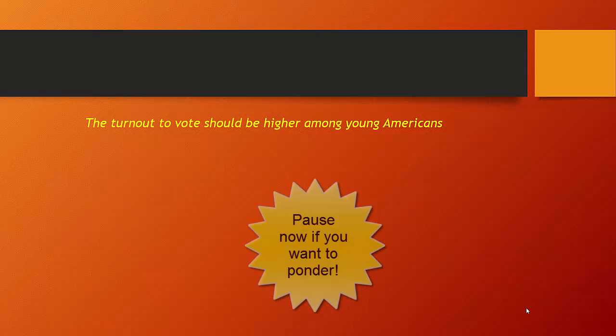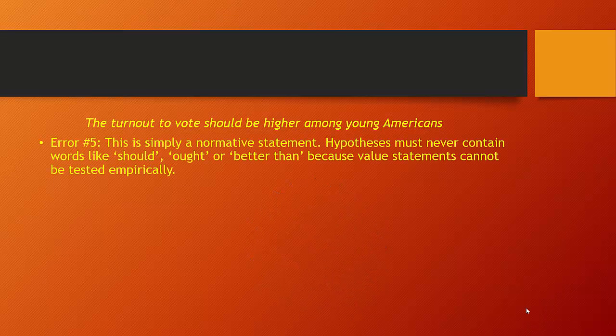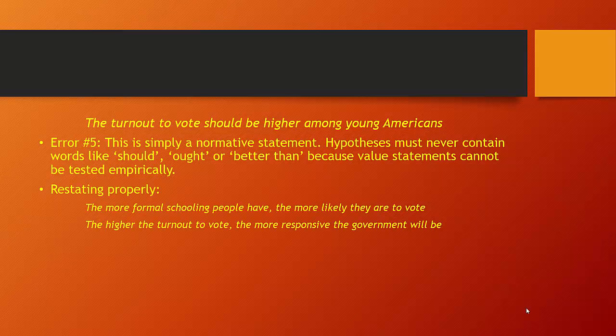Here's a new one: 'The turnout to vote should be higher among young Americans.' If you guessed that this is a normative statement, you're correct. Hypotheses should never contain words like should, ought, or better than, because value statements cannot be tested. So ask yourselves what you want to do regarding turnout — relate it to another variable. For example: the more formal schooling people have, the more likely they are to vote. Or you could look at the impact of voting turnout: the higher the voter turnout, the more responsive a government will be.